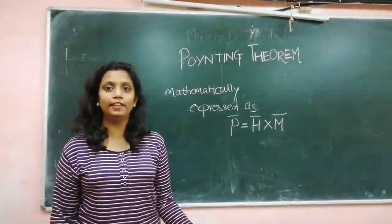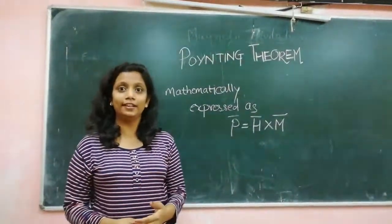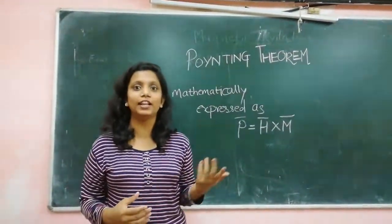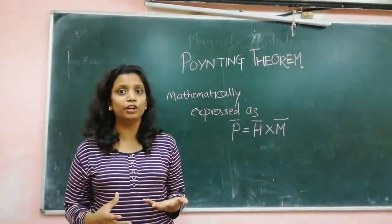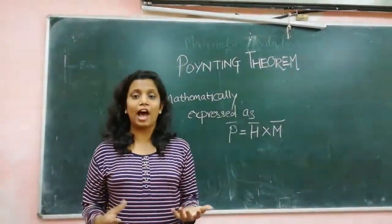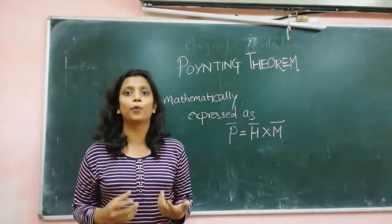What is Poynting Theorem? Poynting Theorem states that the vector product of electric intensity and magnetic intensity at any point is a measure of the rate of energy per unit area at that point.